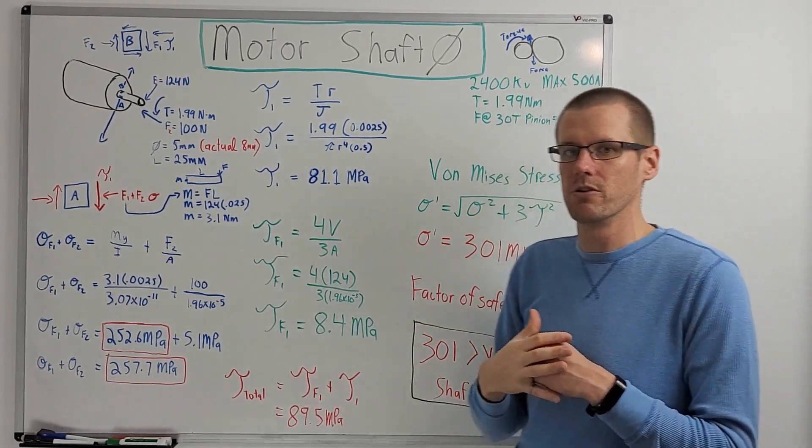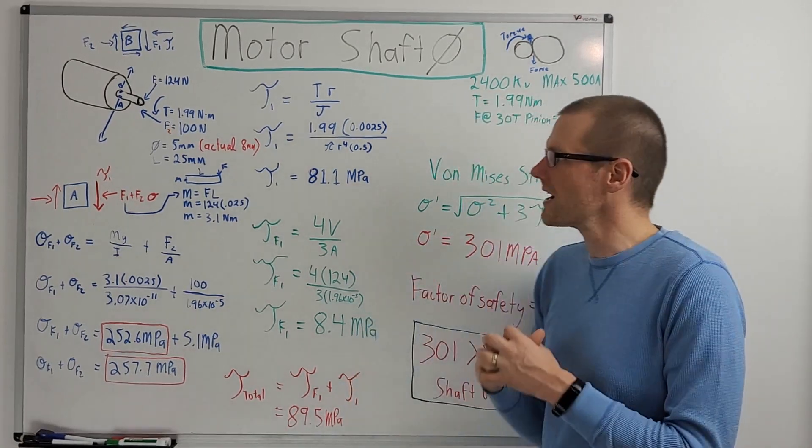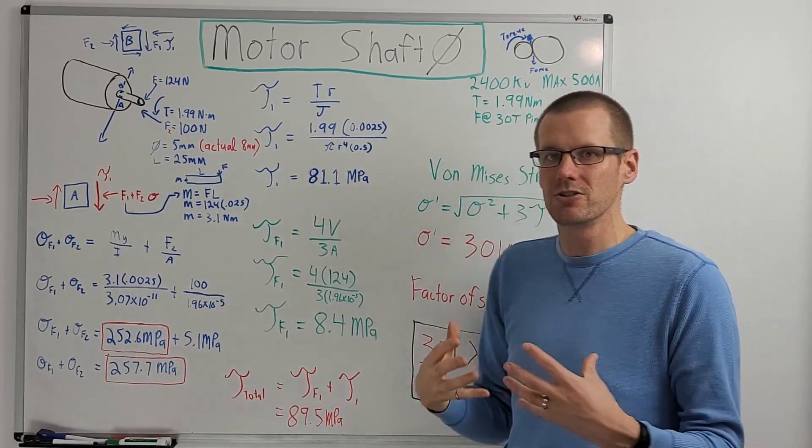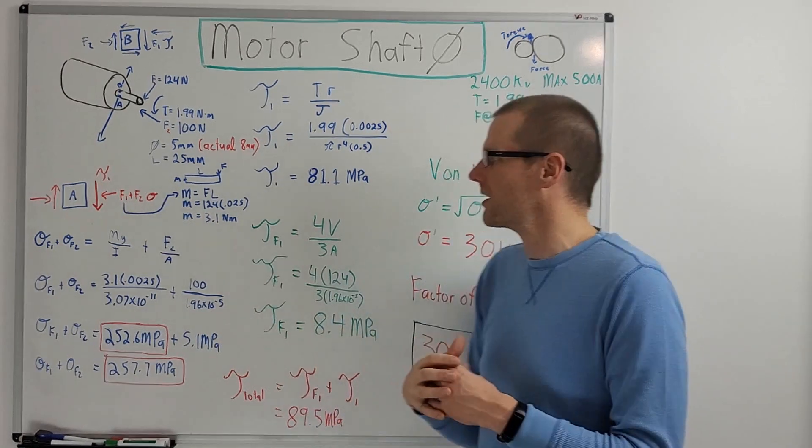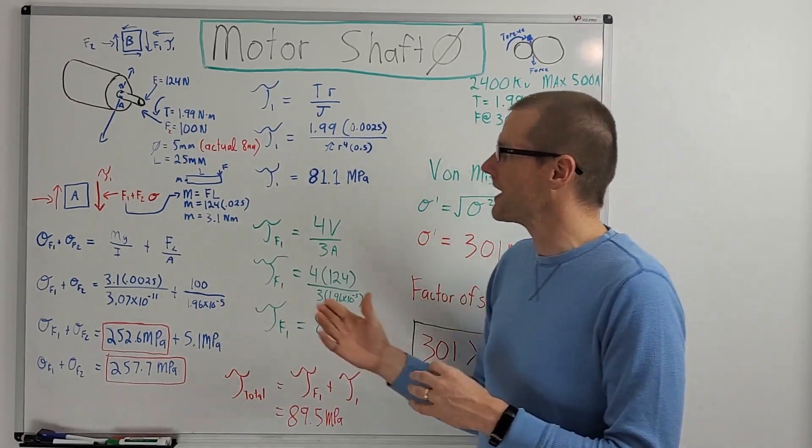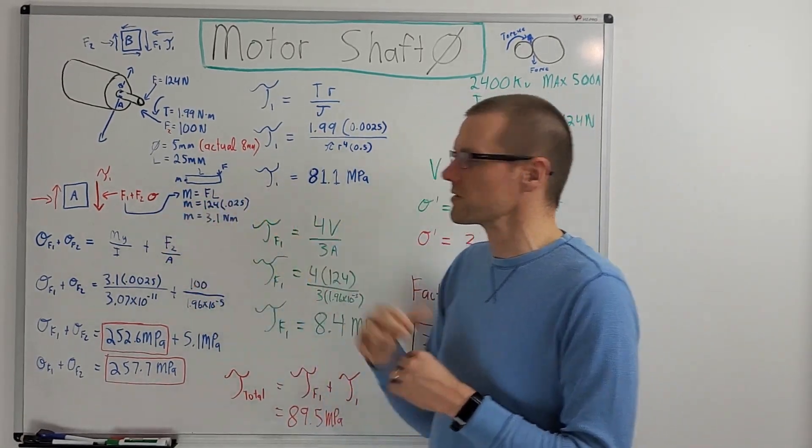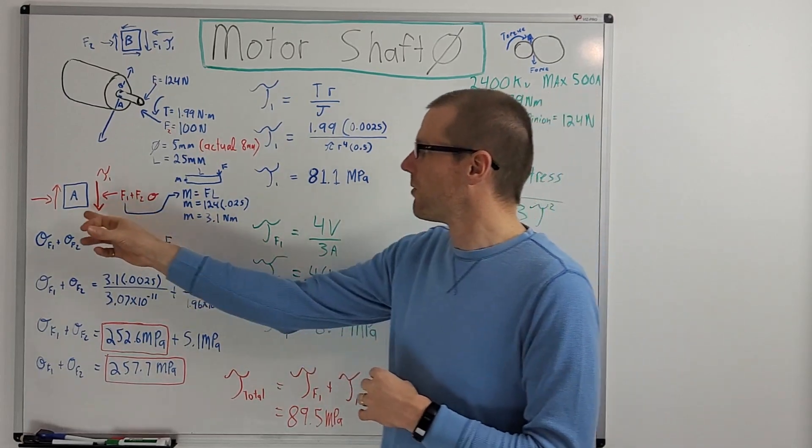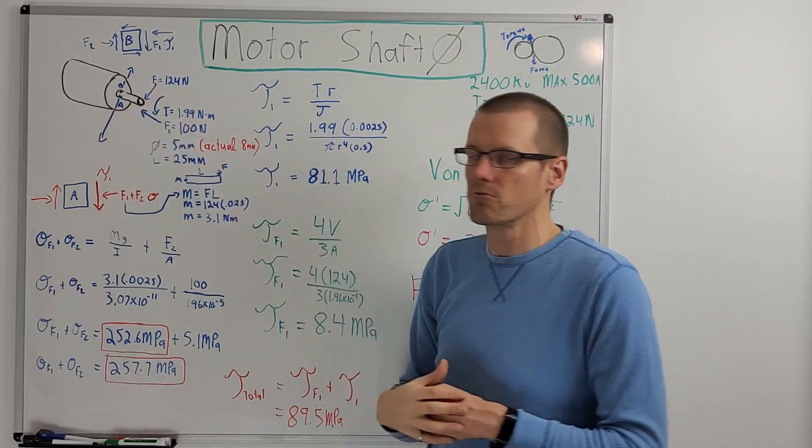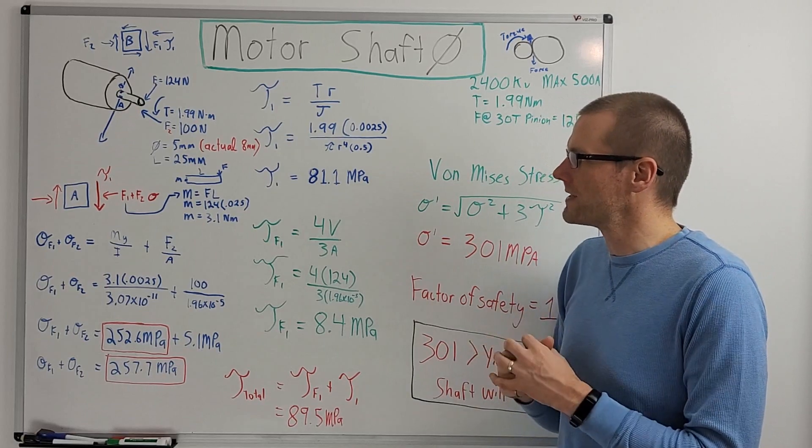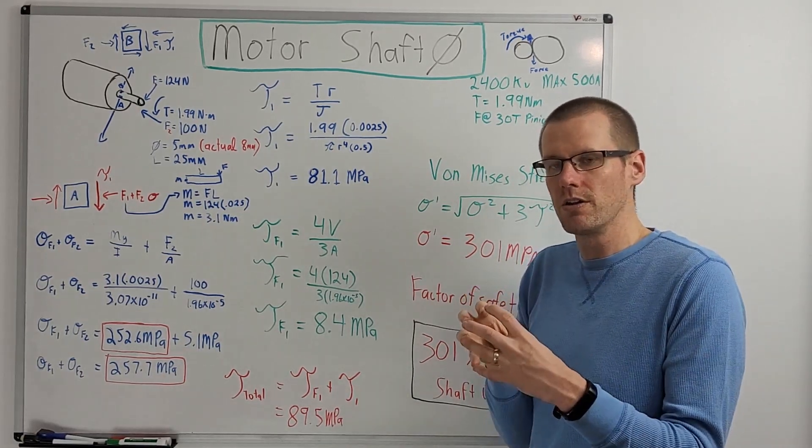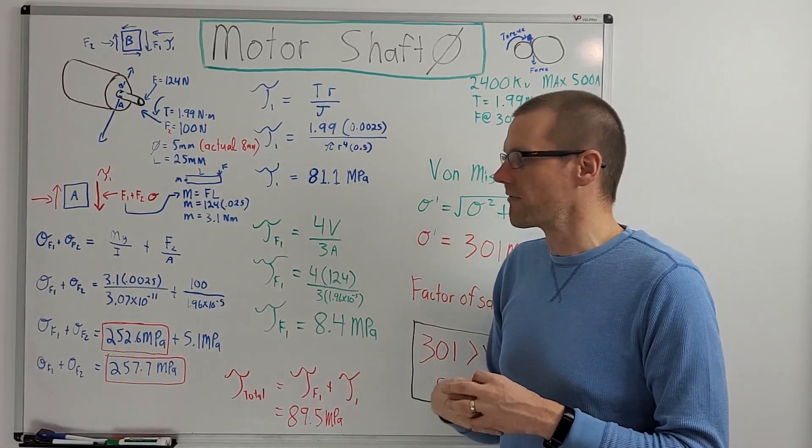And that's why things are different and contribute to a bending stress that we'll see here very shortly. I worked out the maximum torque that we can get based off of 500 amps, and that's about two Newton meters. And then I worked out the force that we can get from this two Newton meters using a 30 tooth pinion, and that's where we get about 124 Newtons.